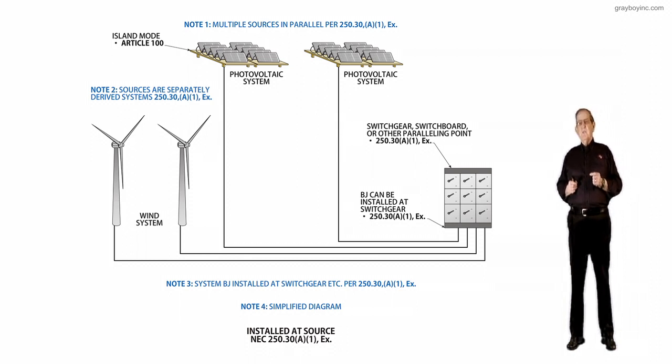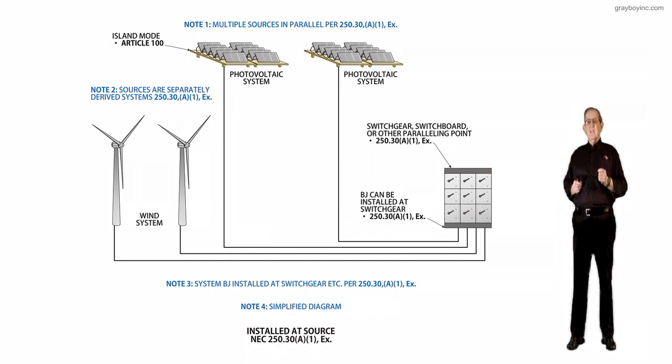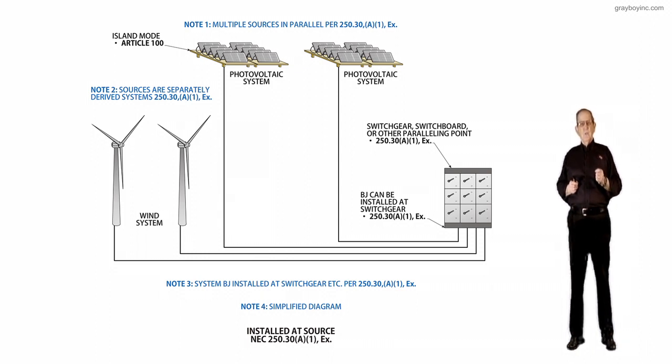The exception would allow the multiple sources to be considered as one separately derived system, and that's important, one separately derived system, and that the system grounding could be made at a single point in the switchgear, switchboard, or other equipment where the paralleling of the source is accomplished.